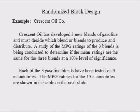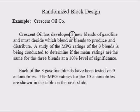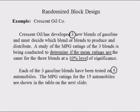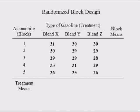In the example below, Crescent Oil has developed three new blends of gasoline and must decide which blend or blends to produce and distribute. A study of the MPG ratings of the three blends is being conducted to determine if the mean ratings are the same for the three blends at a 10% level of significance. Each of the three gasoline blends has been tested on five automobiles. In this table, there are five cars.